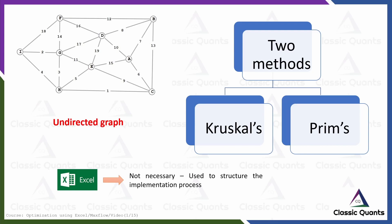Both Kruskal's and Prim's are applicable to undirected graphs. An undirected graph means that when there are two nodes, say A and B, the link between them does not have any particular direction — it is not from B to A or from A to B, just a linkage. Flow can happen in both directions. In our network model, every arc or linkage does not have any arrowhead, confirming it is an undirected graph.